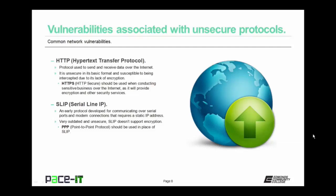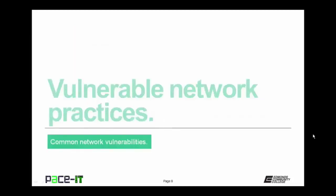Hopefully your network still doesn't use Serial Line IP or SLIP. It is an early protocol developed for communicating over serial ports and modem connections that required a static IP address. It is very outdated and very unsecure. SLIP does not support encryption. Hopefully you will be using point-to-point protocol, or PPP, in its place. PPP does support encryption and is much more secure.